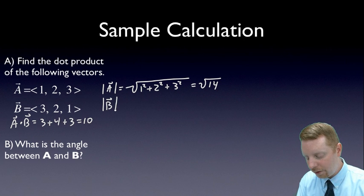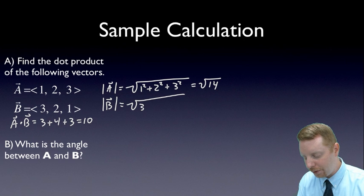B, likewise, will be the same calculation: square root of 3 squared plus 2 squared plus 1 squared, or the square root of 14.